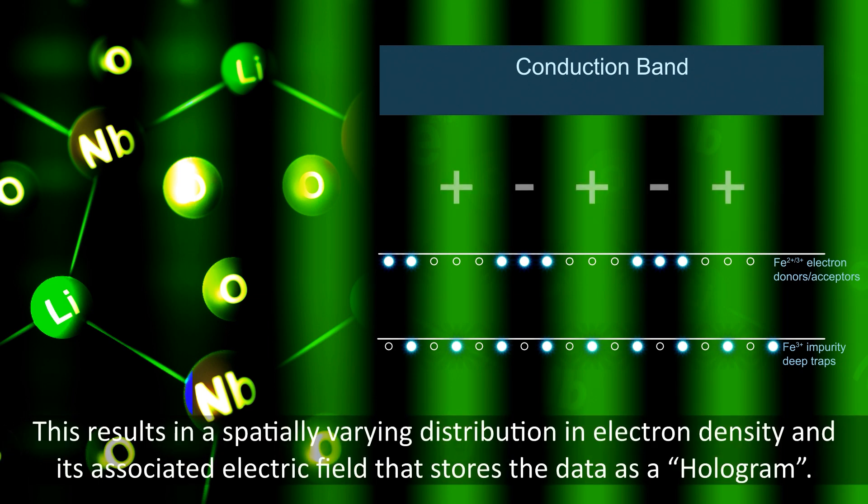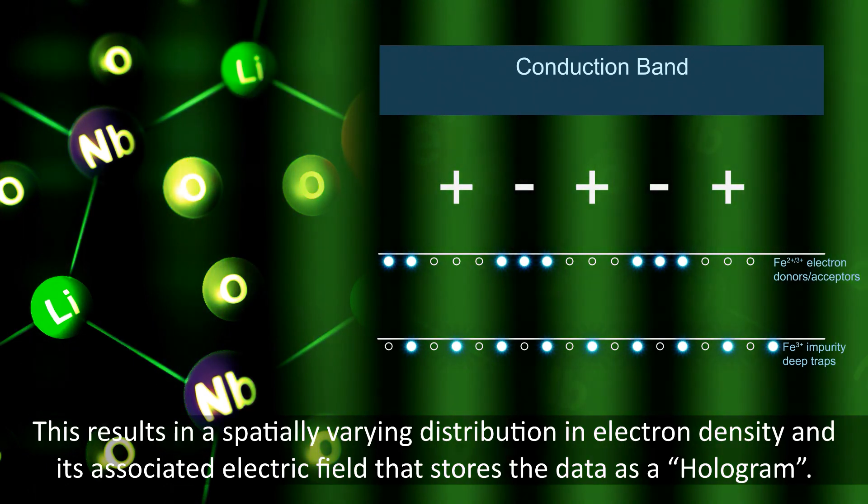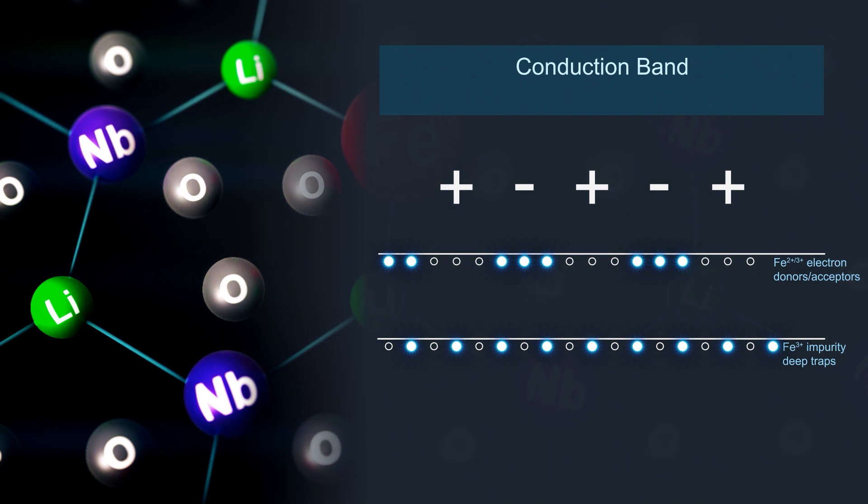This results in a spatially varying distribution in electron density and associated electric field that stores the data in a hologram.